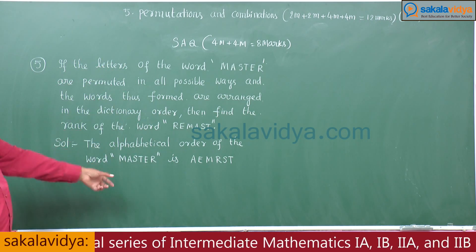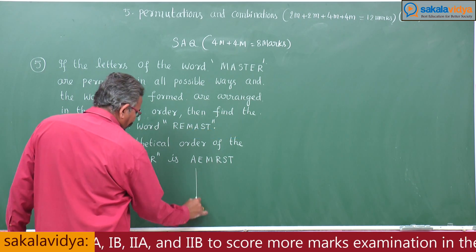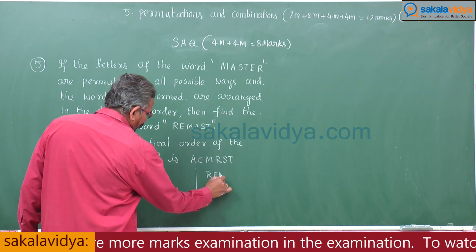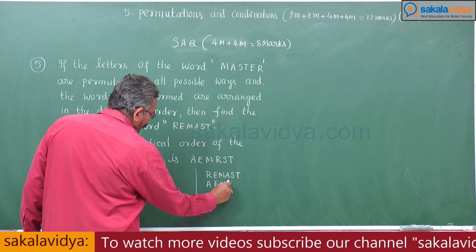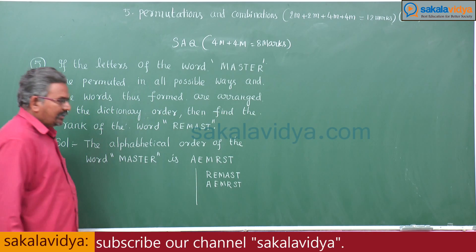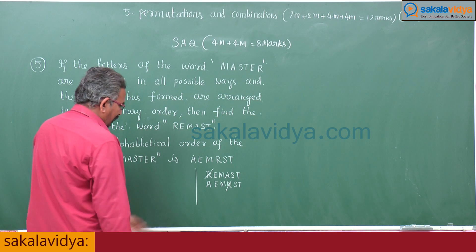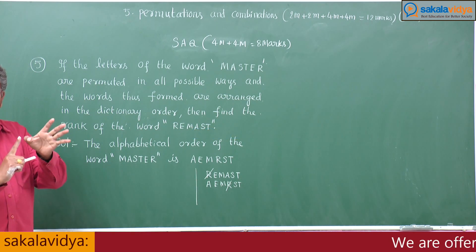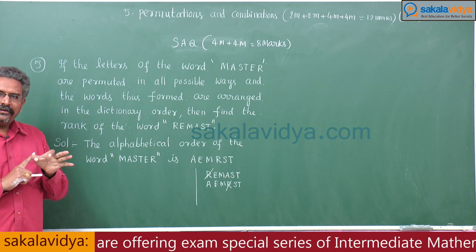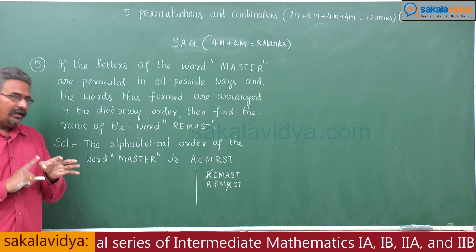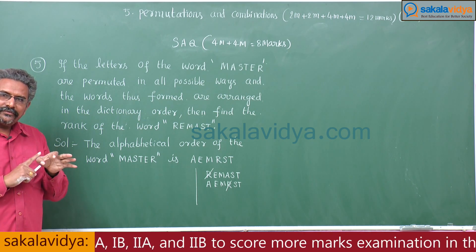Now we have to find the rank of the word REMASTER. The required word starts with R. In the alphabetical order A, E, M, R, S, T — before R we have the letters A, E, M. So we need to find the number of words beginning with A, E, and M.